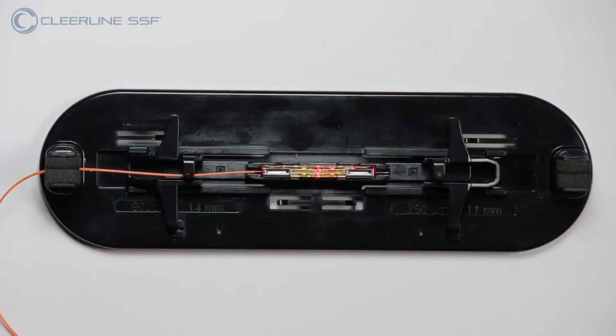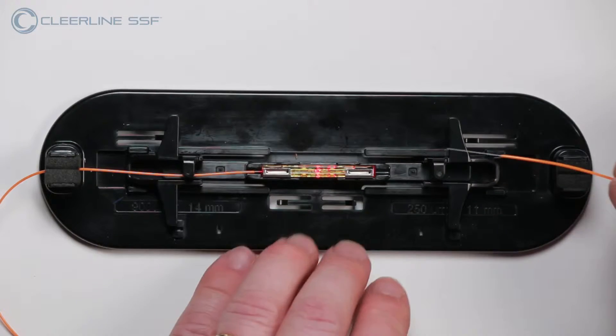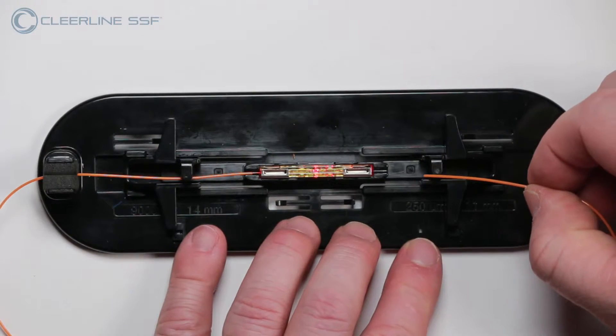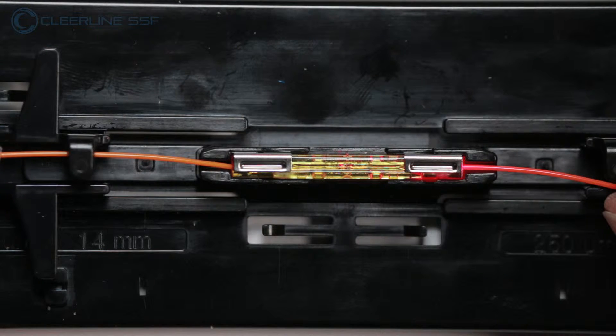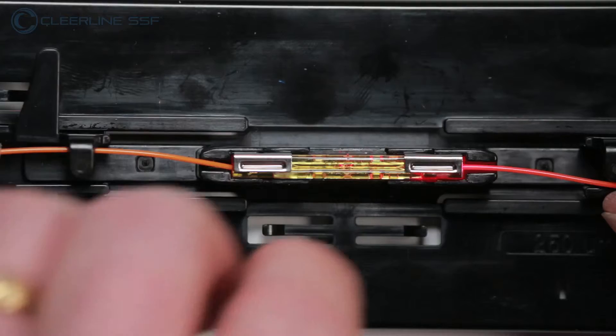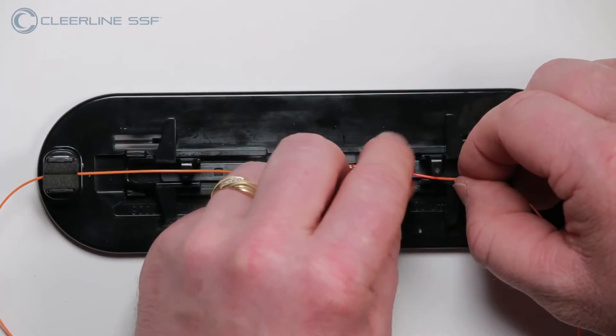Slide the right fiber forward while watching for movement of the left fiber as it is pushed from within the splice, or loss of light if using a VFL. As soon as there is movement or loss of light, maintain forward pressure with a bow in the cable and place the cable under the slide arm and into the foam cable holder.